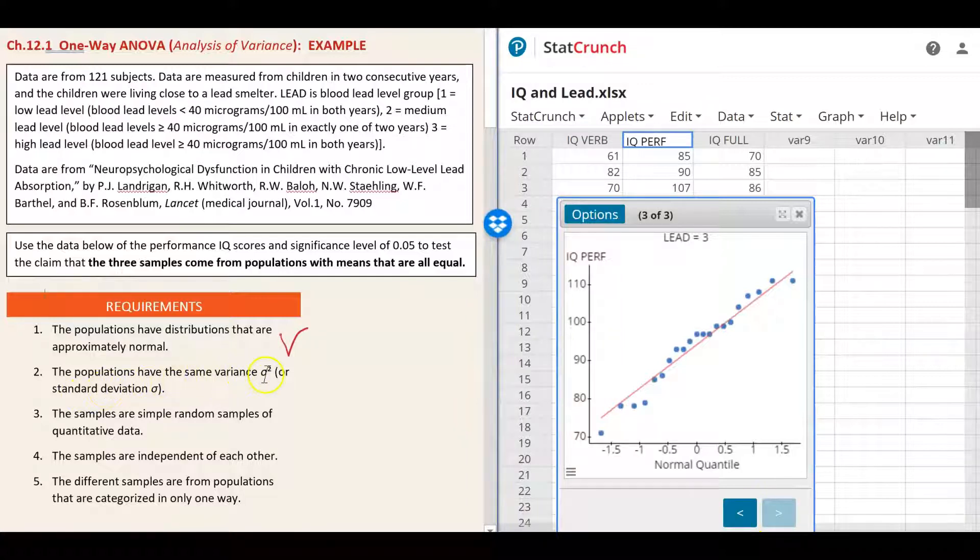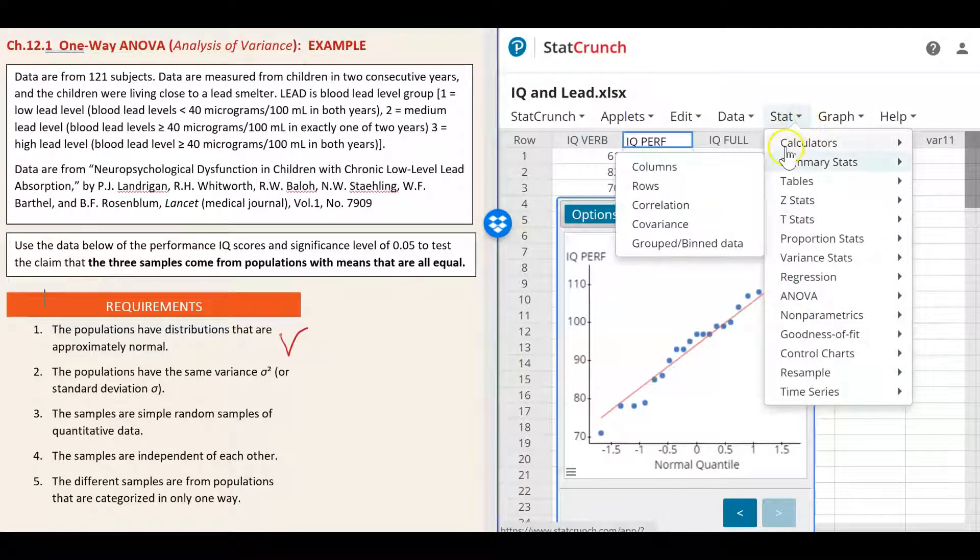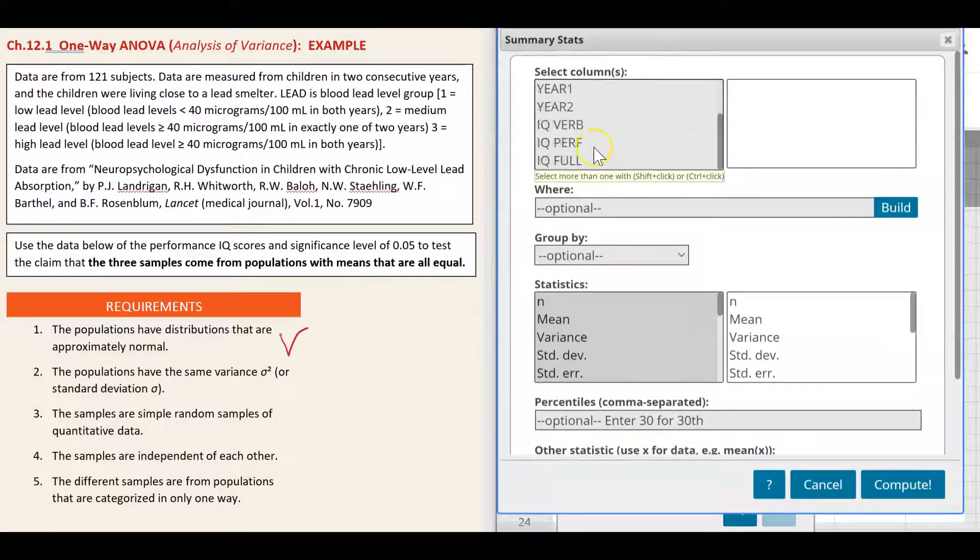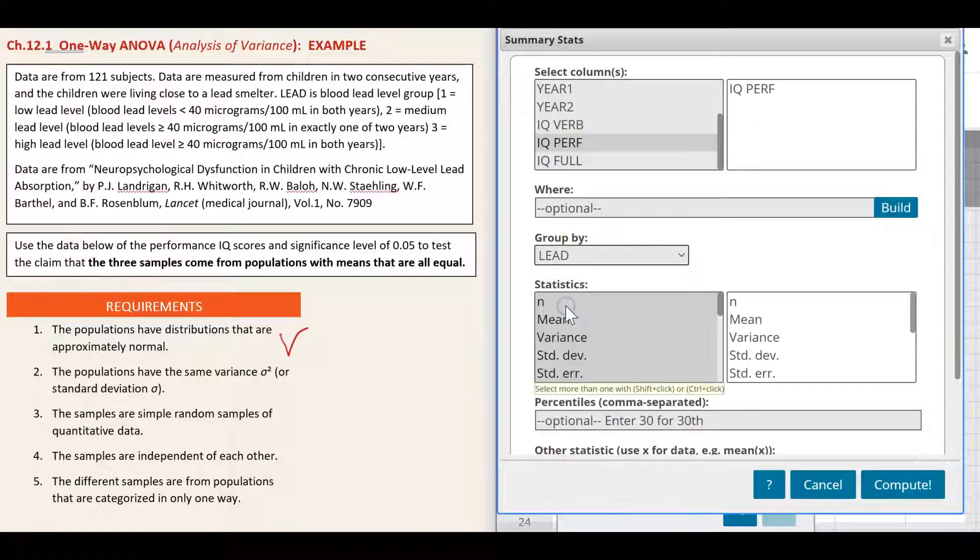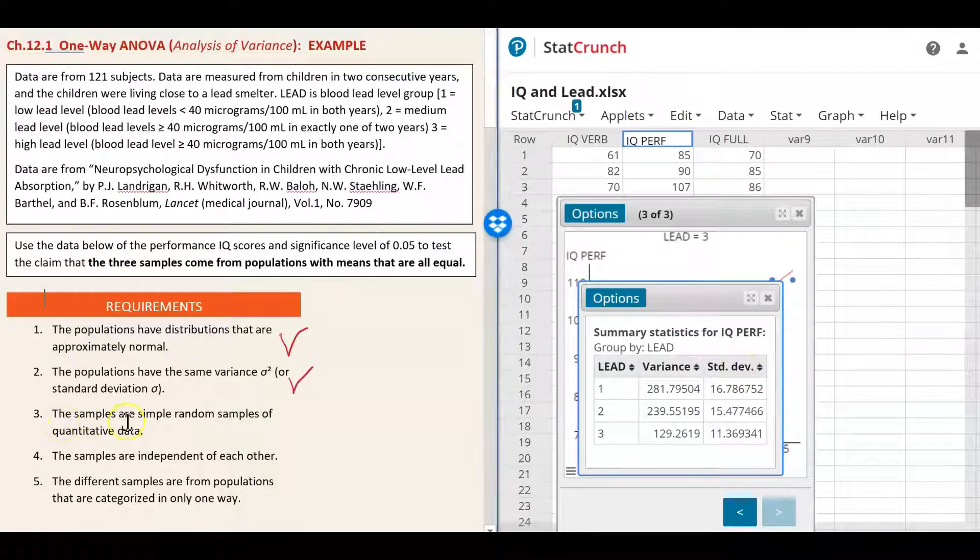Let's find summary statistics. Go to stat, summary stats, columns, select column IQ performance, group by lead level. We want to find variance and standard deviation. Compute. We can see that standard deviation is not very different so the second requirement also met. The third requirement: the samples are simple random samples of quantitative data.